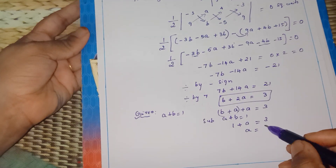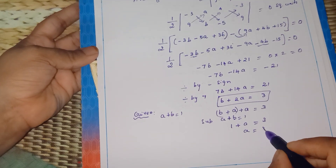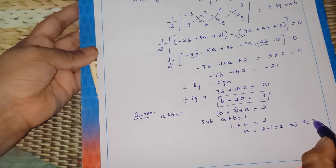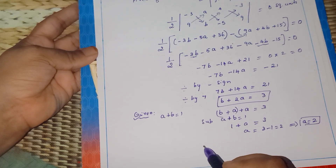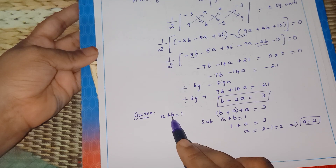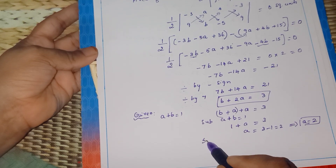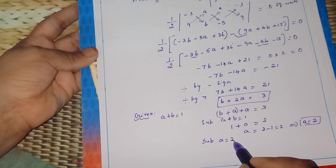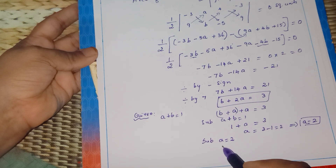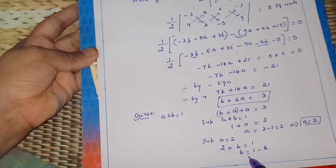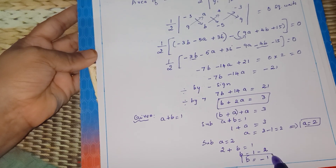From the two equations: subtracting A + B = 1 from 2A + B = 3, we get A = 2. Substituting A = 2 into A + B = 1: 2 + B = 1, so B = 1 - 2, therefore B = -1.